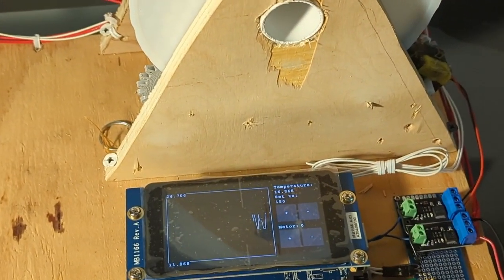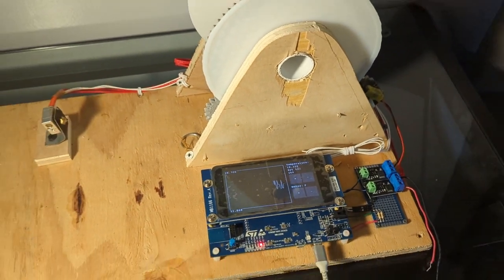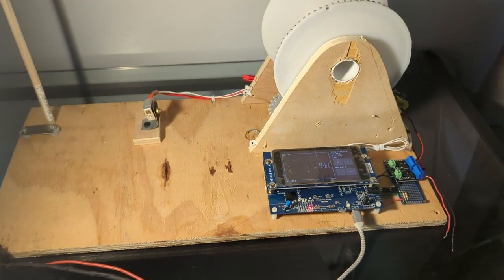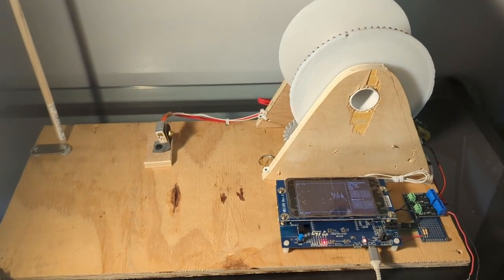We can see here that the temperature is fluctuating quite a bit. This is because of the non-linear temperature reading that we talked about in a previous video.